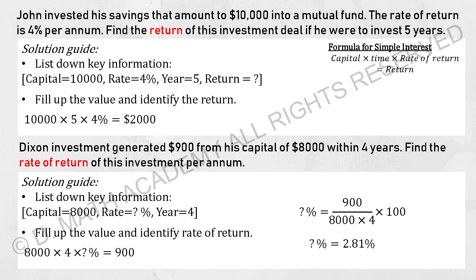For the next part, this looks more like what will be assessed in your exam. John invested his savings of 10,000 into a mutual fund. The rate of return is 4% per annum. Find the return of this investment if he were to invest for 5 years. The key thing here is that they didn't mention the keyword 'exponential,' which directly indicates that this is a simple interest question. For simple interest, the formula is: capital multiplied by time multiplied by rate equals return on investment.